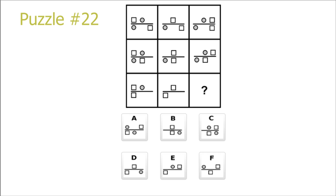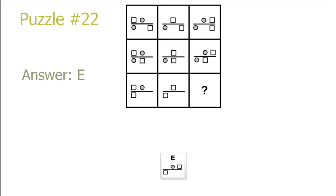Puzzle 22. Here we have a row and column puzzle. If you look at the bottom of the picture, we see that it repeats on the rows. And if you look at the top of the picture, we see that it repeats on the columns. So we have our answer E.